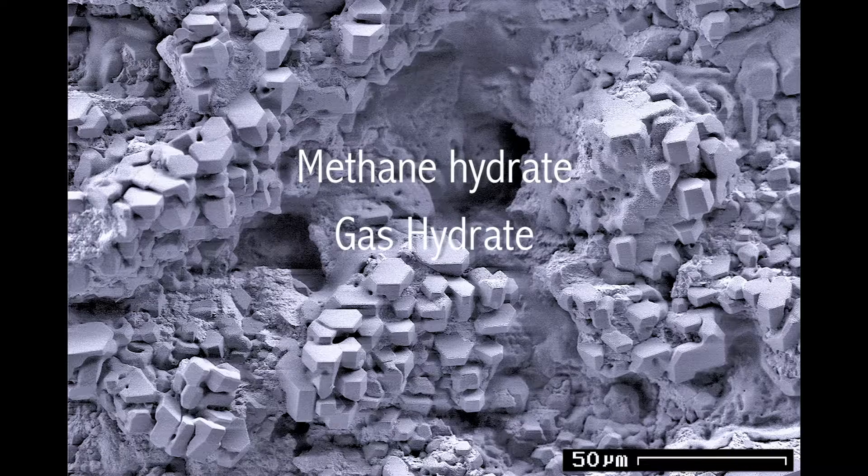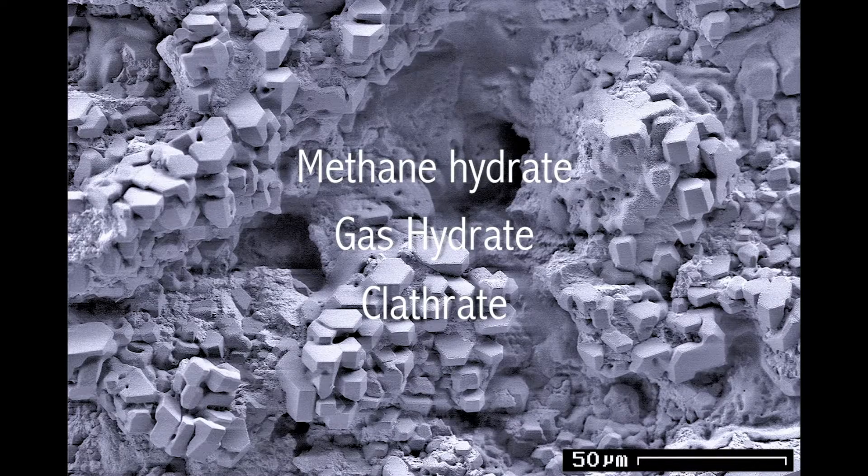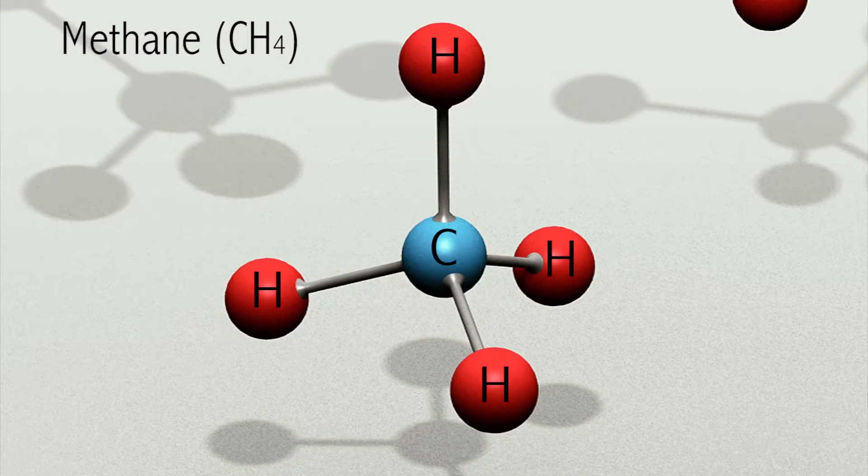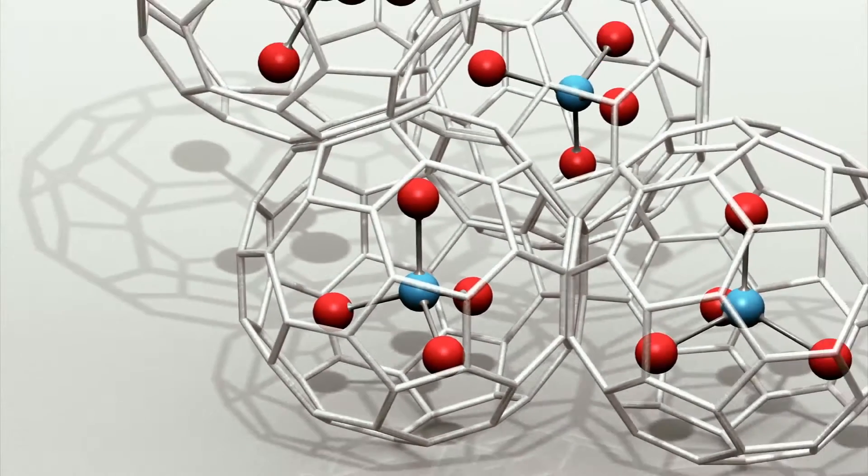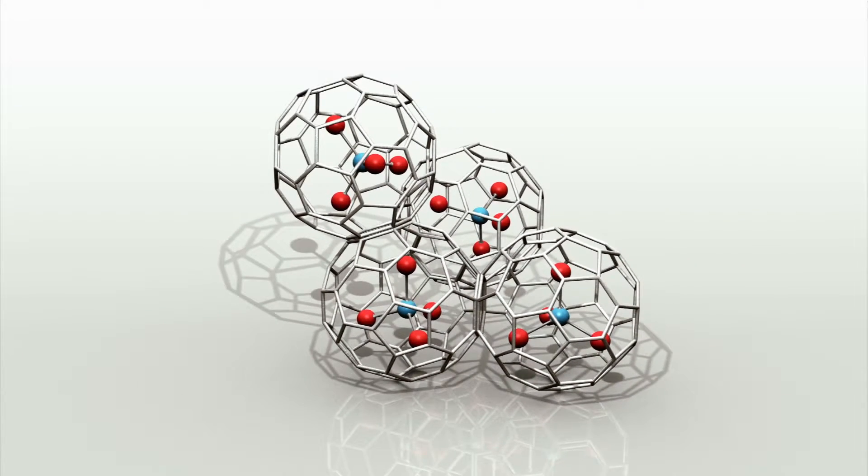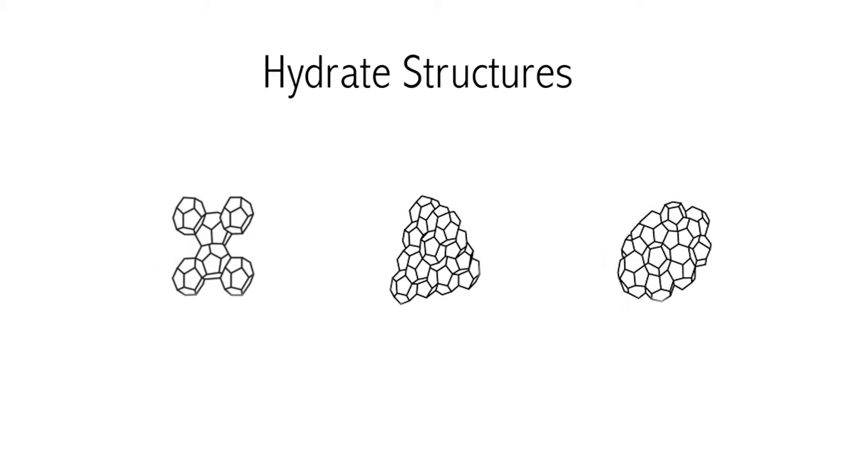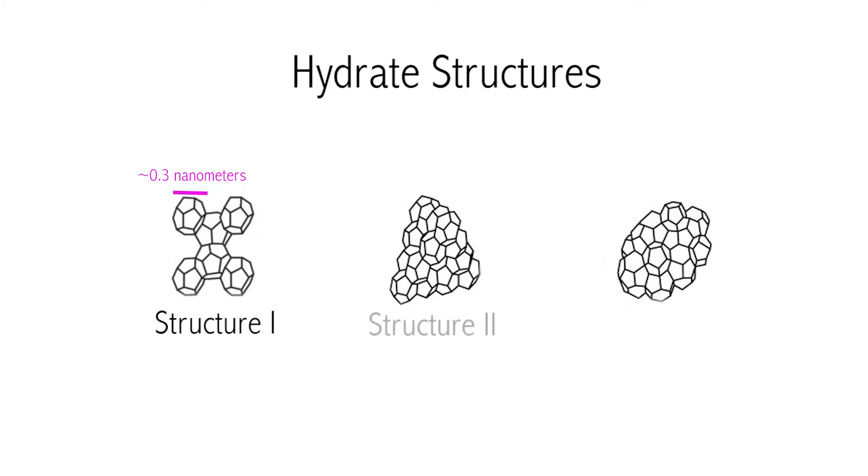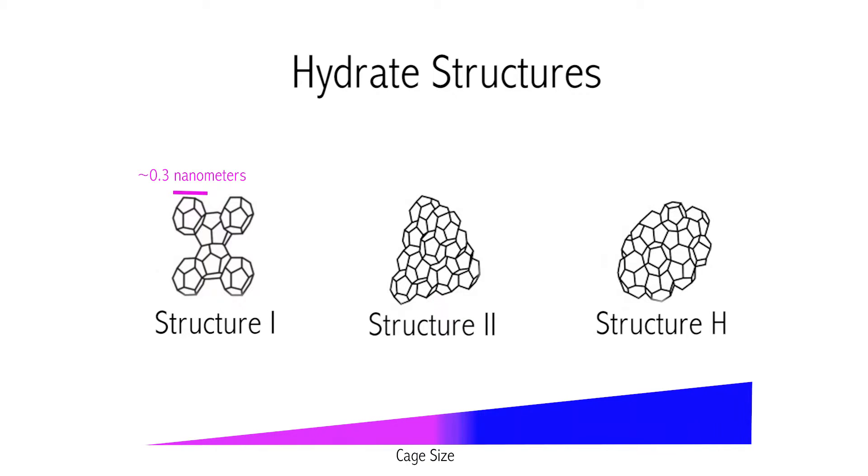Methane hydrates, or gas hydrates or clathrates, are crystalline water-based solids with gas, in this case methane, that is trapped inside cages of hydrogen-bonded frozen water molecules. The cage encloses a space of a particular size and only a gas molecule small enough to fit within the site can be hosted in that specific hydrate structure.